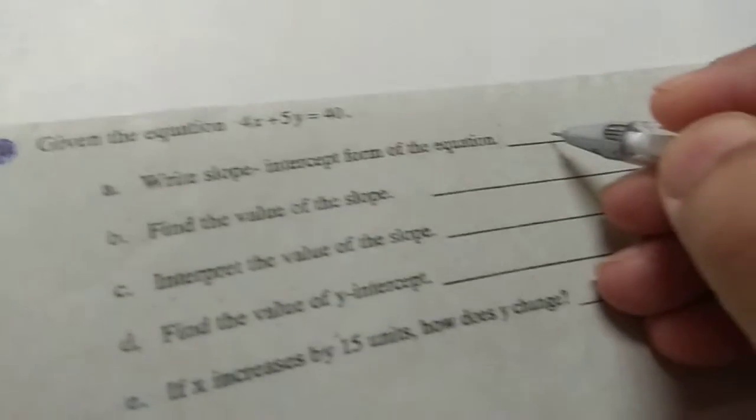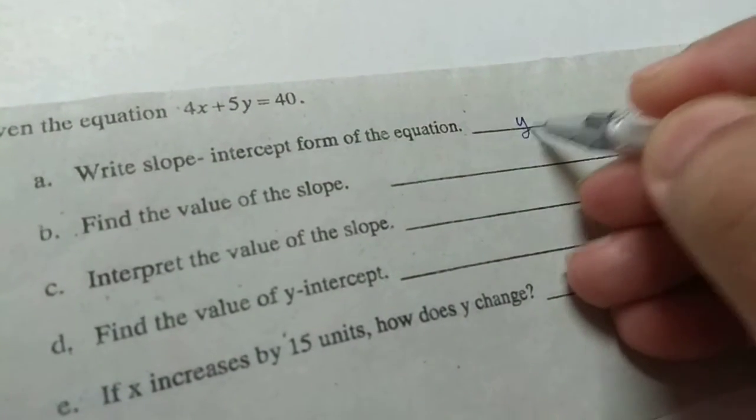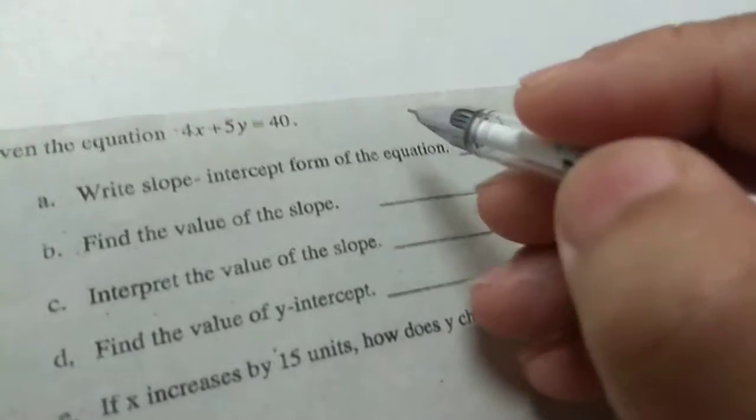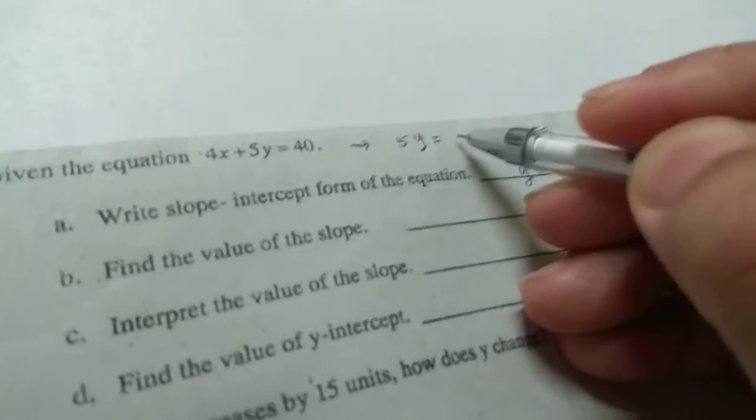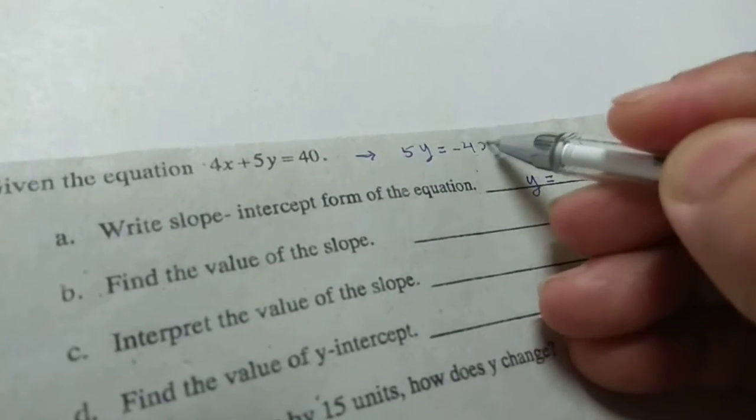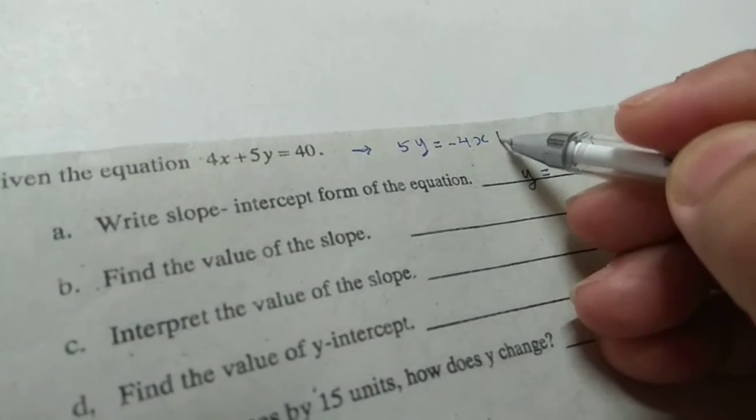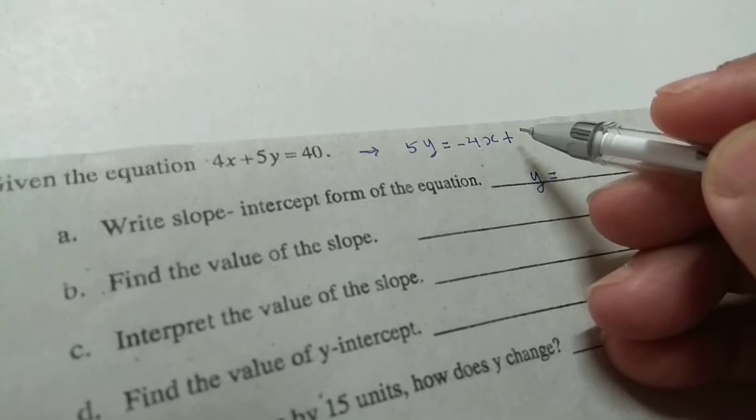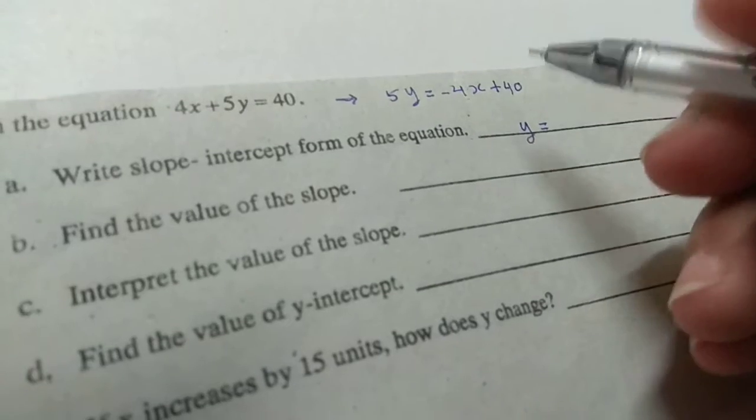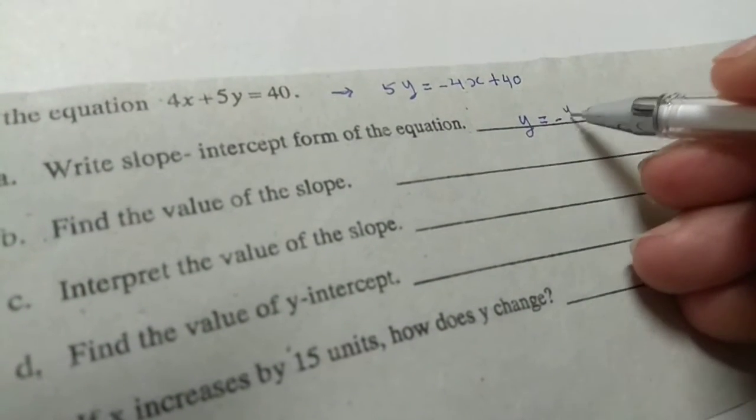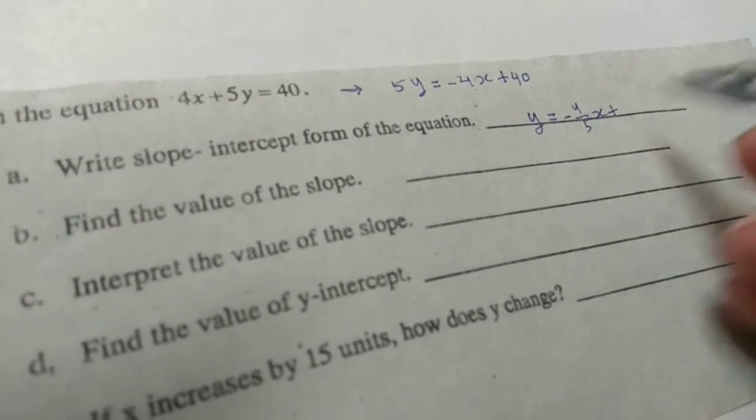In the equation, write slope intercept form. Slope intercept form is the form where y is alone on the left side. So y is equal to... y is equal to negative 4x plus... negative 4x plus 40. So if you divide left and right by 5, y is equal to negative 4/5 x plus 8.